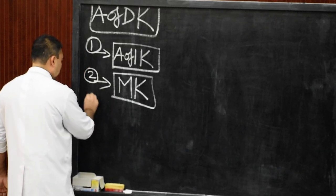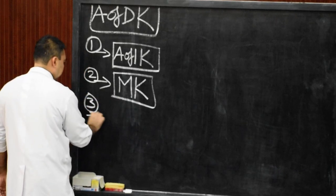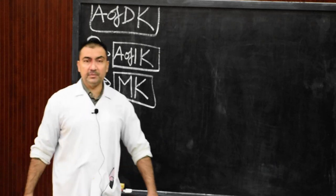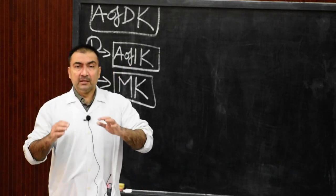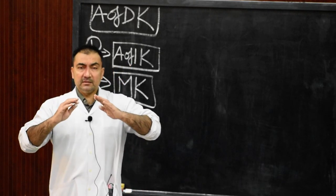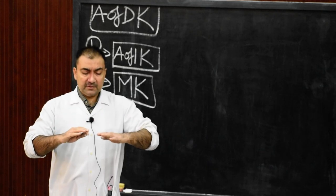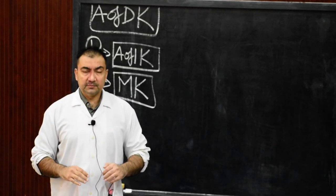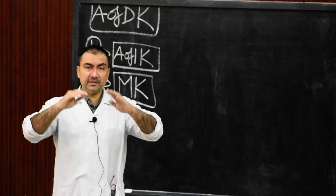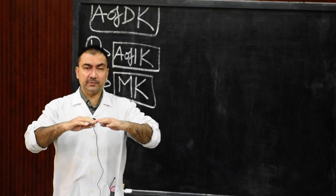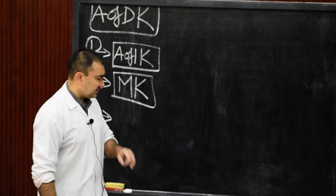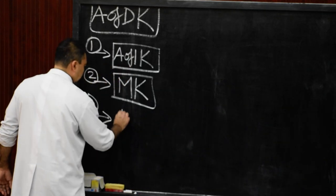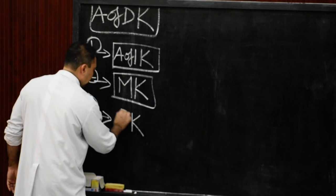The third anomaly we will discuss is a situation in which the kidneys will not ascend — that means they will not ascend to their respective position below the diaphragm. This will be known as the pelvic kidney.